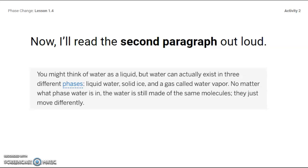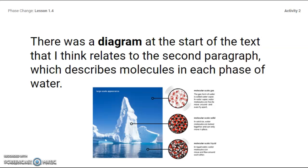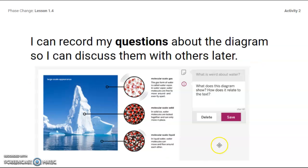Now I'll read the second paragraph aloud. You might think of water as a liquid, but water can actually exist in three phases: liquid water, solid ice, and a gas called water vapor. No matter what the phase of water is, the water is still made out of the same molecules — they just move differently. There is a diagram at the start of this text that I think relates to that second paragraph, describing molecules in each phase of water. I know that scientists communicate ideas using diagrams with shapes, colors, and lines. I wonder what these lines and circles mean — what is this image showing me? I might annotate and say just that: what does this diagram show and how does it relate to the text I'm reading?